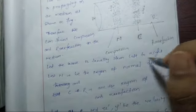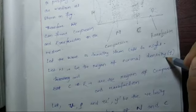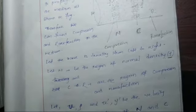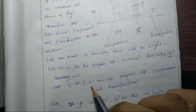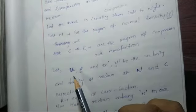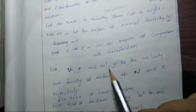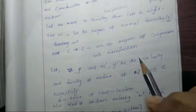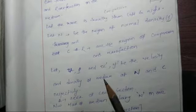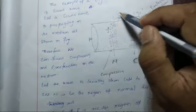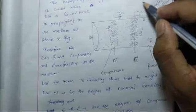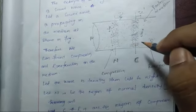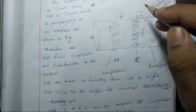Let the wave travel from left to right. Let N be the region of normal density, denoted as ρ. C and R are the regions of compression and rarefaction. Let u and ρ be the velocity and density of the medium at N, and u' and ρ' be the velocity and density at C respectively. Here u is the velocity of oscillation at N, u' is the velocity of the sound at C, ρ is the normal density, and ρ' is the density due to compression.